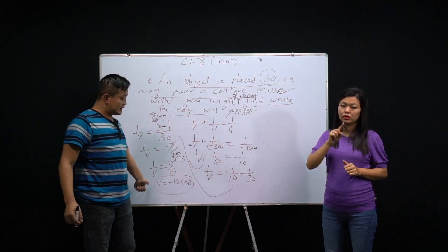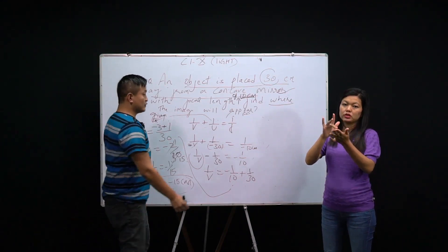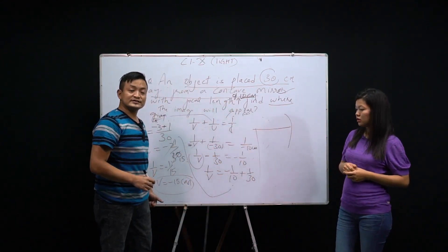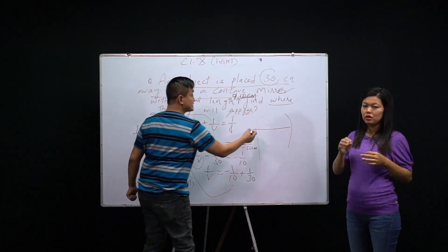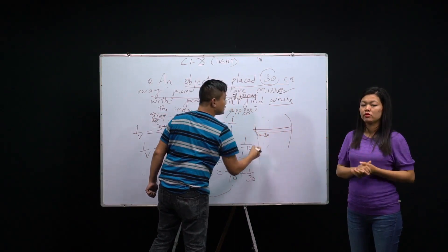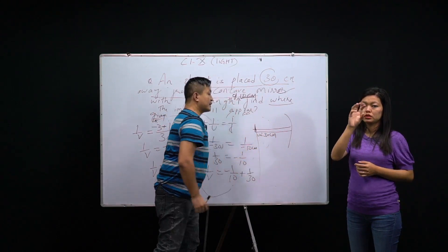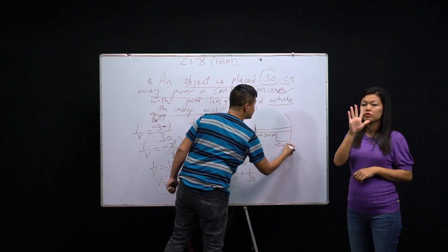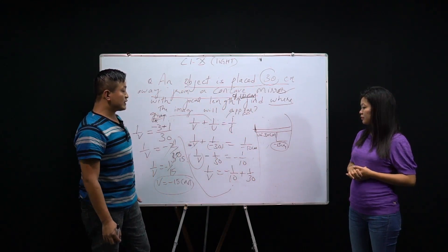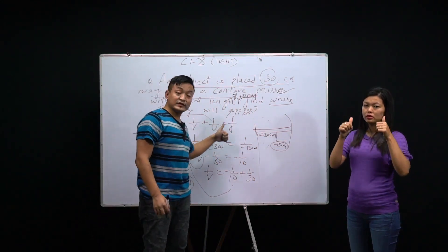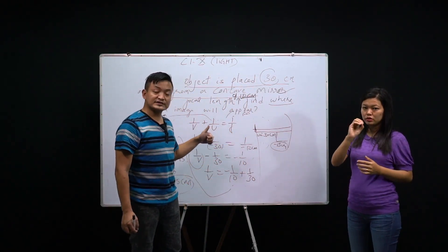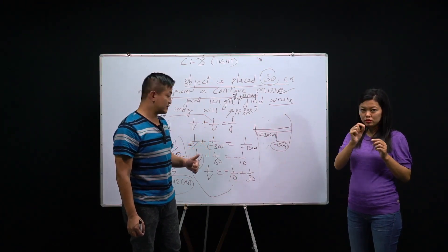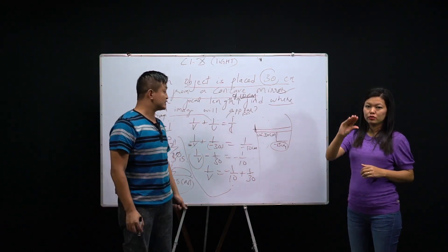The image distance is -15 centimeters. Since the object distance was -30 cm and the image distance is -15 cm, we can conclude that the size of the image is smaller than the size of the object. This is how we find the numerical answer using the mirror formula.